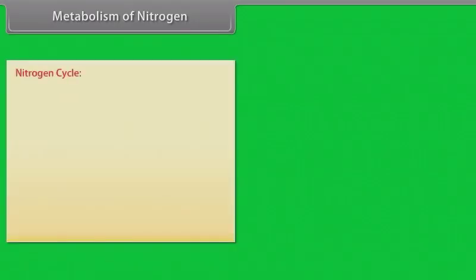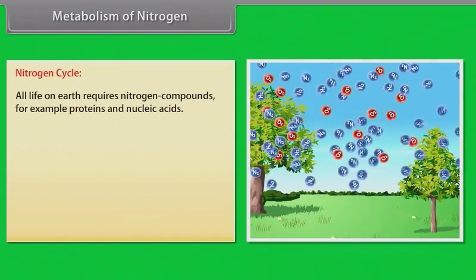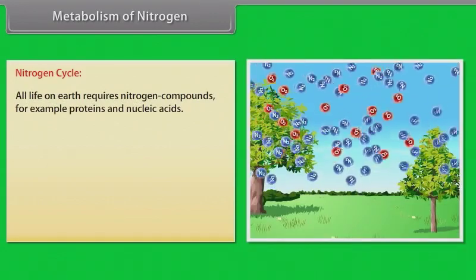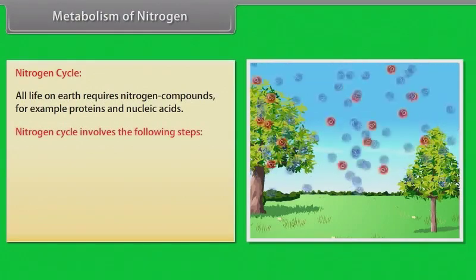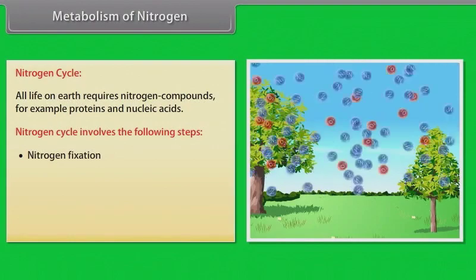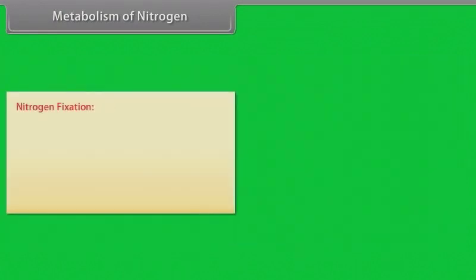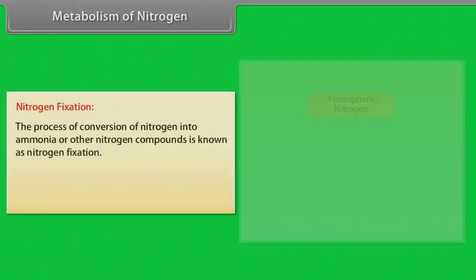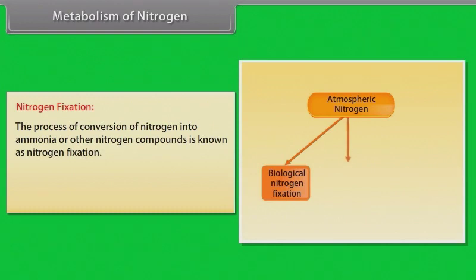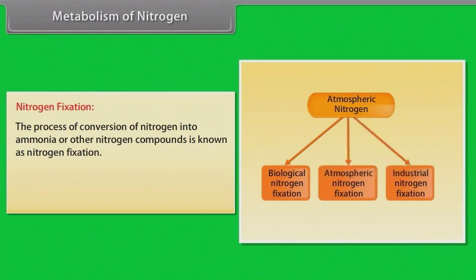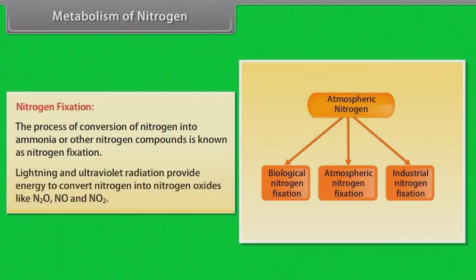Metabolism of nitrogen — Nitrogen cycle: all life on earth requires nitrogen compounds, for example proteins and nucleic acids. The nitrogen cycle involves the following steps: nitrogen fixation, ammonification, nitrification and denitrification. Nitrogen fixation: the process of conversion of nitrogen into ammonia or other nitrogen compounds is known as nitrogen fixation. Lightning and ultraviolet radiation provide energy to convert nitrogen into nitrogen oxides like N₂O, NO and NO₂.